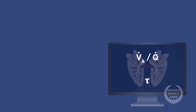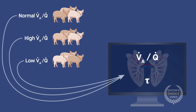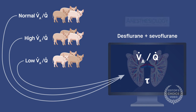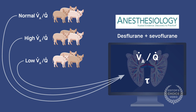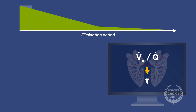They tested the model using existing data from a companion study in which piglets with different VAQs were simultaneously anesthetized with desflurane and sevoflurane. The results are published in the journal Anesthesiology. The researchers found that the global VAQ affects the washout time constant during the entire elimination period, not just in the rapid beginning stage, as previously assumed.